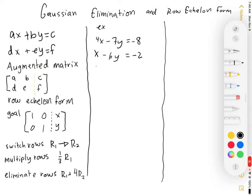So let's go ahead and turn this into an augmented matrix. That's the easy part. 4, negative 7, negative 8, 1, negative 6, negative 2. And I'm going to go ahead and just kind of put in just a little bit of a separator, just saying that there's an equal sign still there.